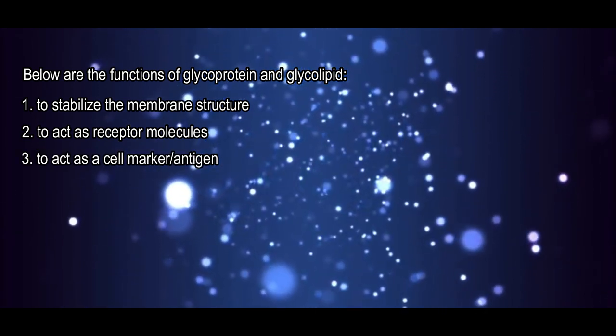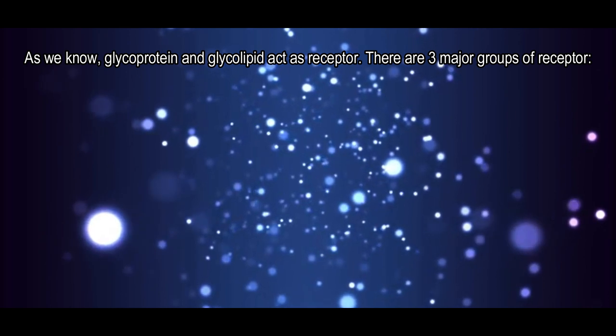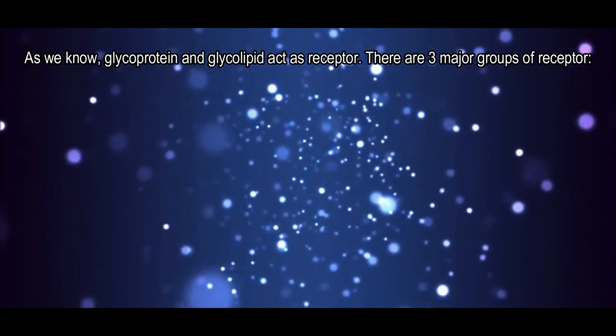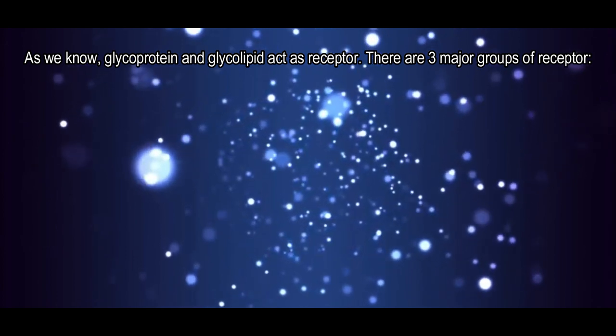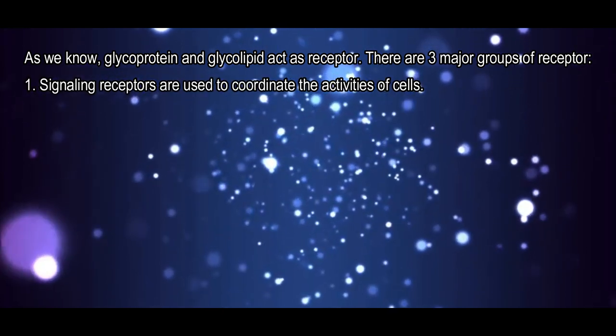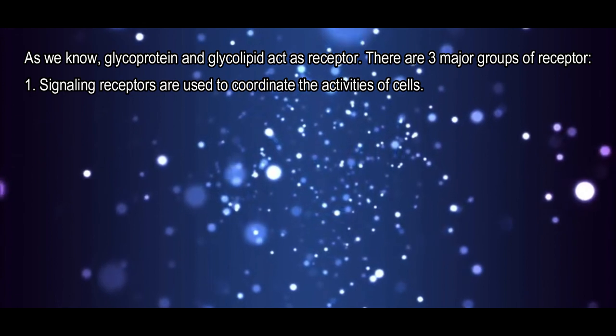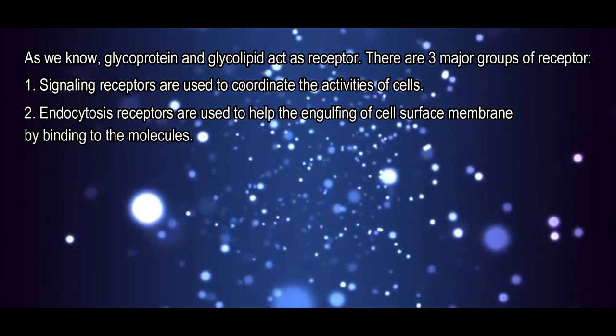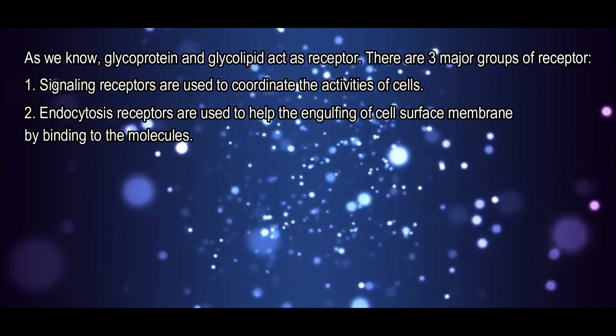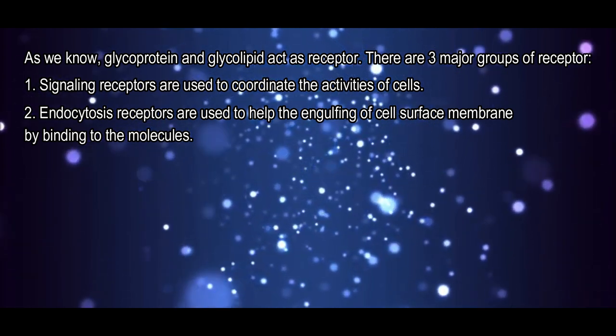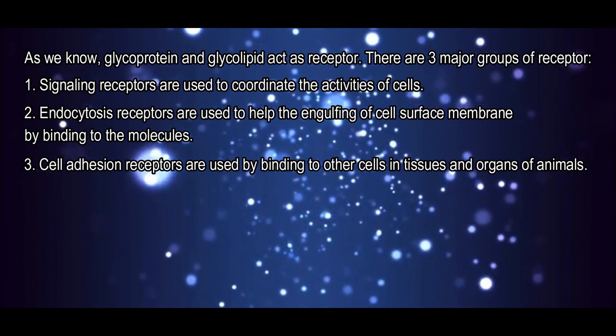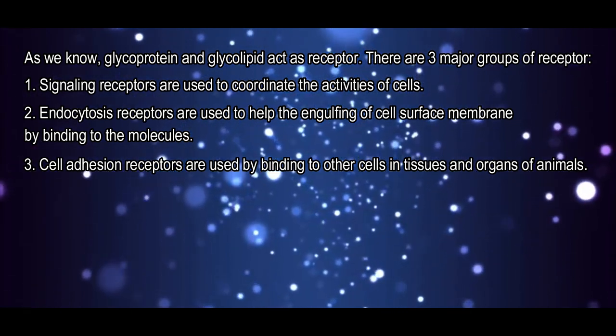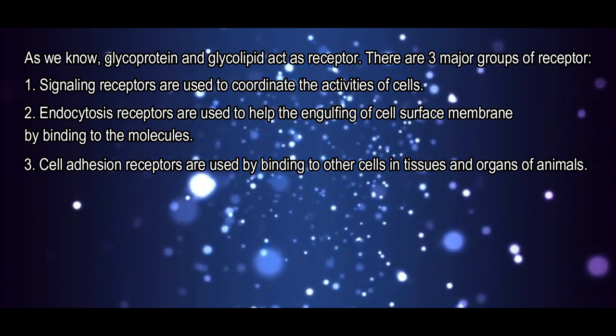As we know, glycoproteins and glycolipids act as receptors. There are three major groups of receptors. First, signaling receptors are used to coordinate the activities of cells. Second, endocytosis receptors are used to help the engulfing of the cell's surface membrane by binding to molecules. The last one, cell adhesion receptors, are used by binding to other cells in tissues and organs of animals.